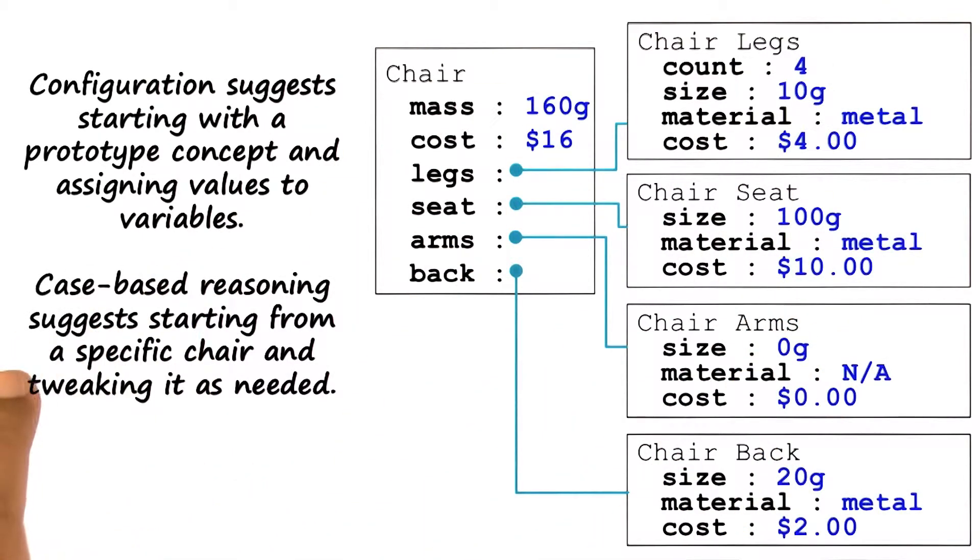In case of case-based reasoning, we start with the design of a specific chair that we had designed earlier, look at its variables.